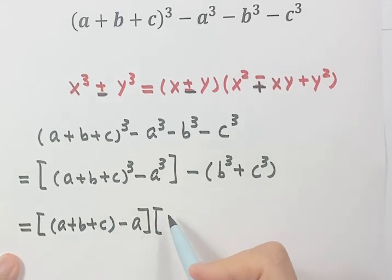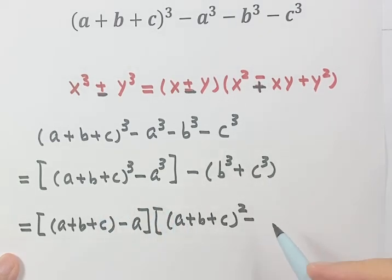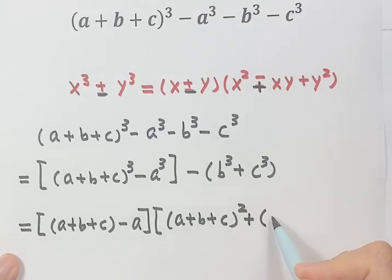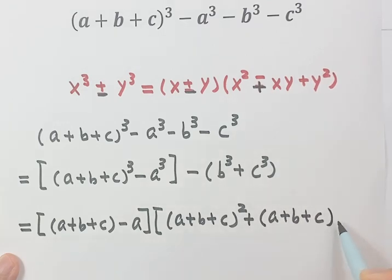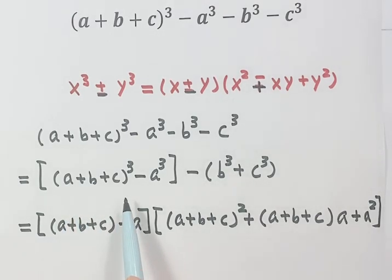For this one, apply the formula. So here we have the first term minus the second term. Then here first term squared, then these two times together, and here's a plus. And here just a plus b plus c, then times a. Then this term squared, so plus a squared. Okay, that's for the first one.